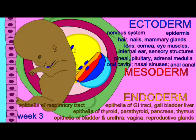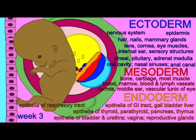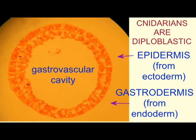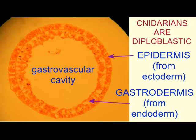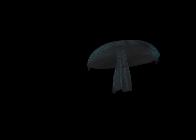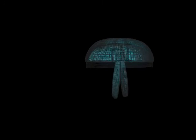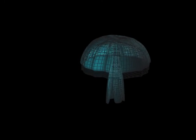These germ layers in cnidarians form around a central space known as the gastrovascular cavity. Not only does this cavity allow for the digestion of larger food items, it also performs some circulation and distribution of materials, and it allows for muscles which are contracting to have something to contract against, providing resistance which aids in movement.